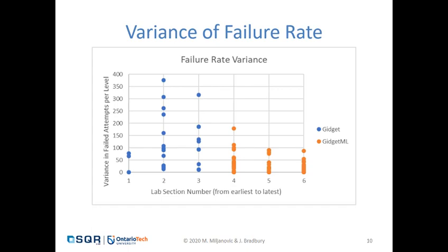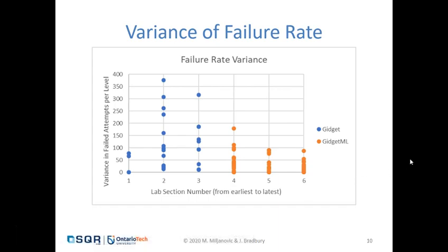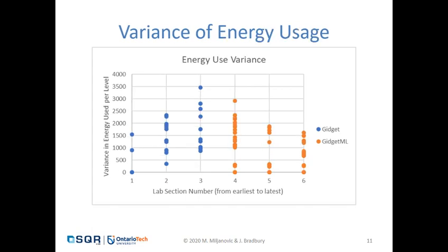We looked specifically at failure rate and energy usage as measurable variables to determine adaptation for GidgetML. We found that those playing Gidget significantly varied in their failure rate across levels — some participants were very successful at one level while failing repeatedly at another. As we performed more adaptations and collected more data, this variance in failure rate decreased significantly over time, reaching its lowest point by the final lab section. A similar trend was observed in energy usage: the Gidget group had significantly higher energy usage variance than the GidgetML group, and this variance decreased as more data was collected.